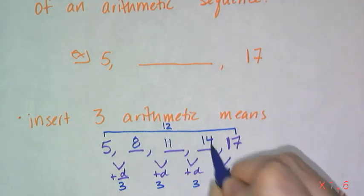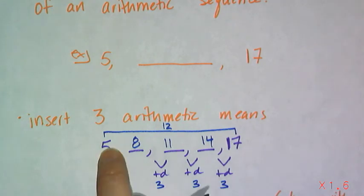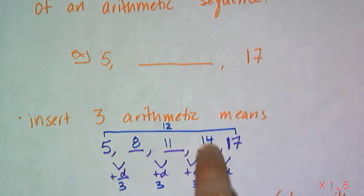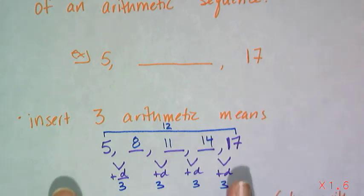11, and then 14, and you've generated an arithmetic sequence that has 1, 2, 3, 4, 5 terms, where 5 and 17 were the outer terms. And that's how you figure out arithmetic means.